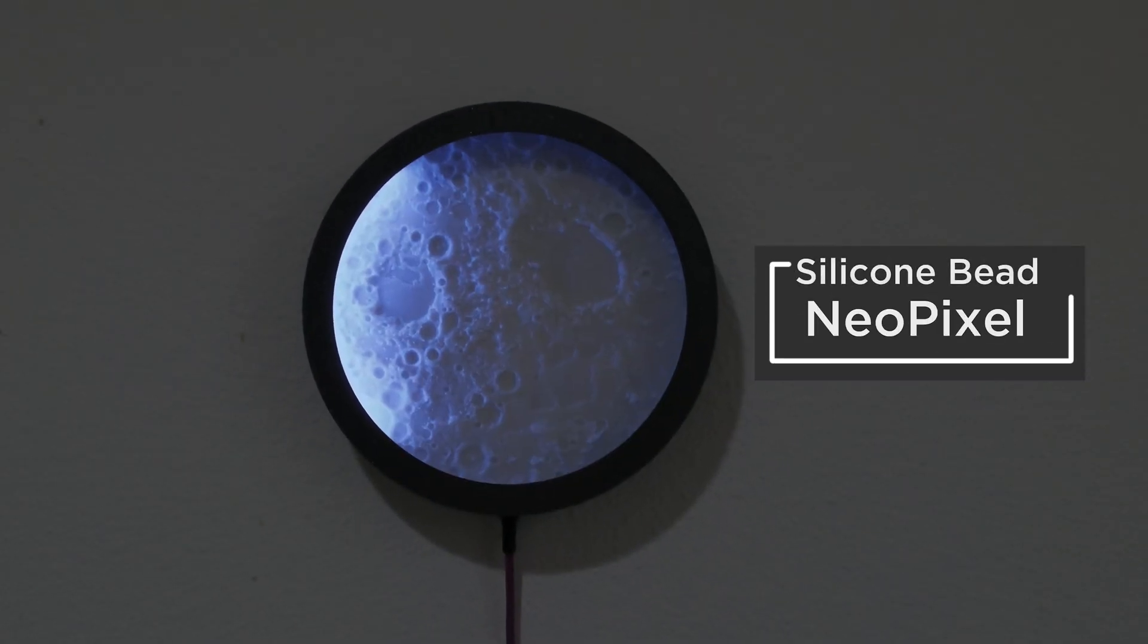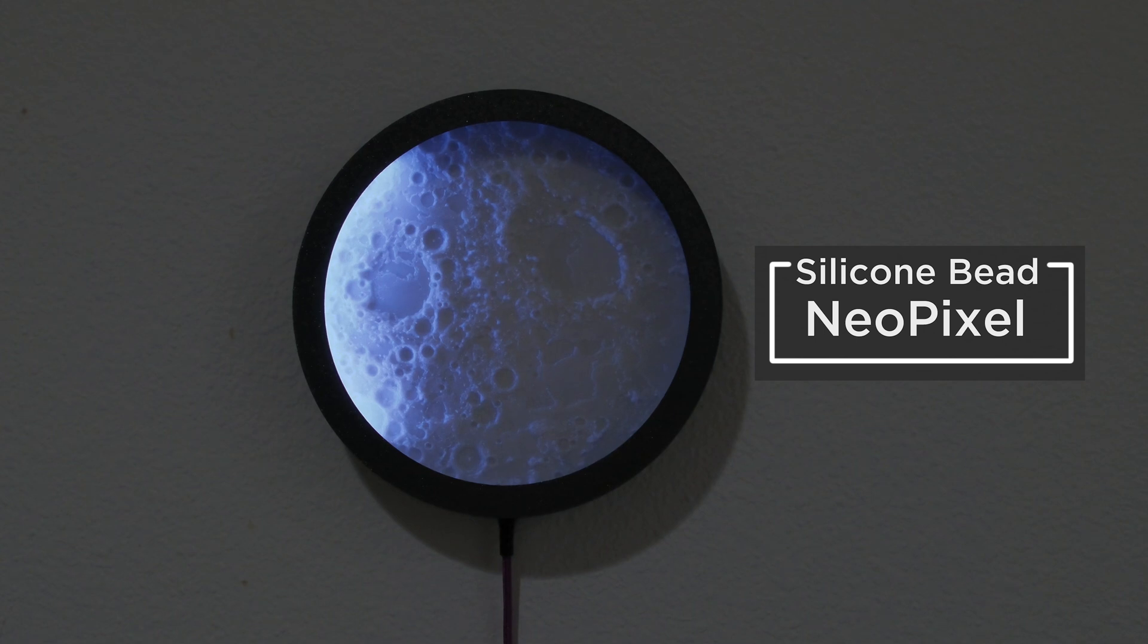It uses a NeoPixel strip to display the phases of the moon by lighting up different sections of the LED strip.